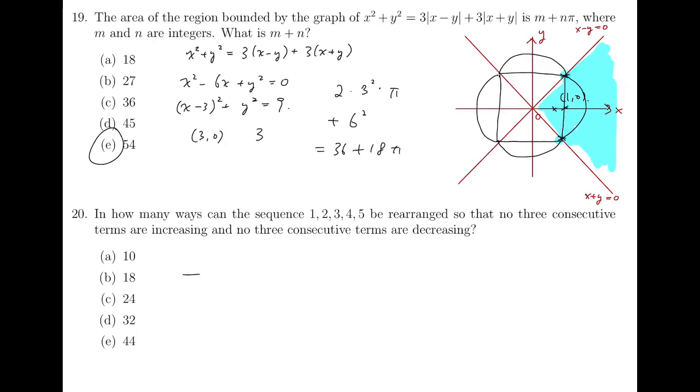Question 20, to rearrange the five numbers that meets the condition in the problem, the only possibilities are for the numbers to increase, decrease, increase, decrease, or to do the other way around, decrease, increase, decrease, and increase. So this leaves us to four possibilities for the second and the fourth entry. 3, 5, or we swap them, 5, 3, or 4, 5, and 5, 4, respectively.